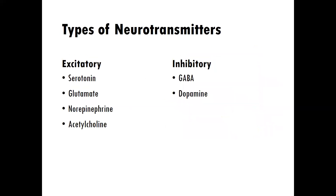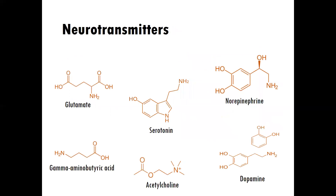We're also going to explore specific types of neurotransmitters. We'll look at excitatory types — serotonin, glutamate, norepinephrine, and acetylcholine. We'll also learn about inhibitory types — GABA and dopamine. There are other neurotransmitters of course, but those six are the ones we're going to spend the most time on in class. Here is a graphical representation of those six neurotransmitters that I had mentioned.